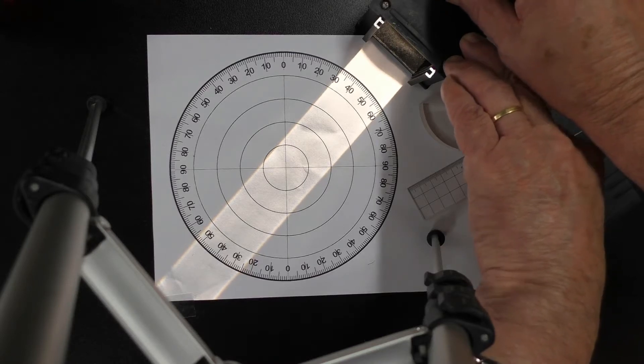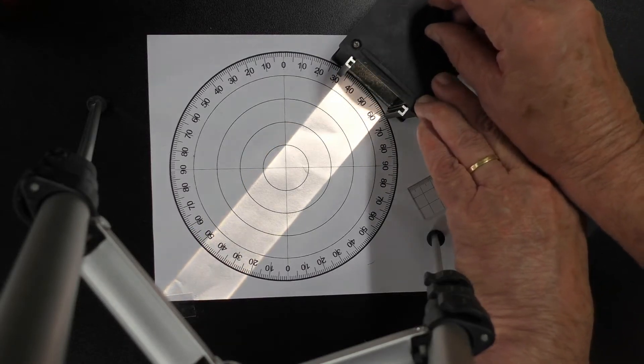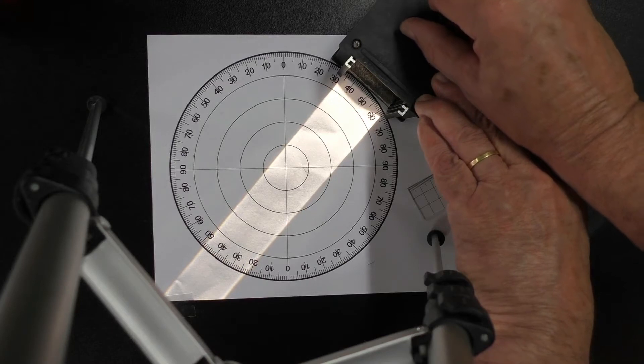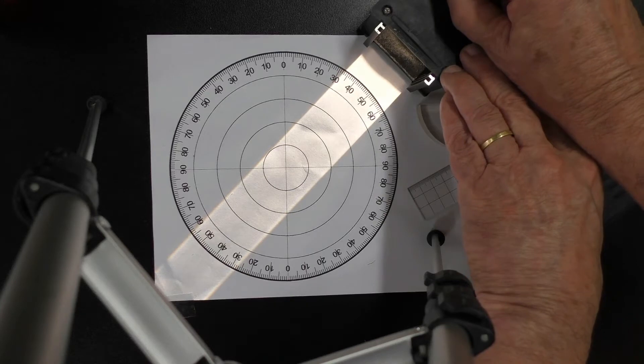So I'm going to turn this knob here, you can see the knob there. I'm going to adjust that so that it's all parallel. Turn that tightness so that the light is all parallel.